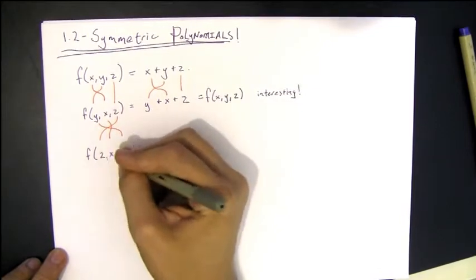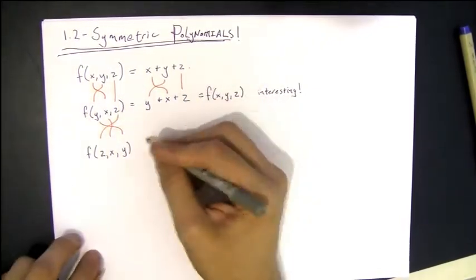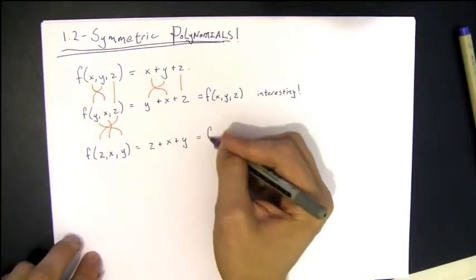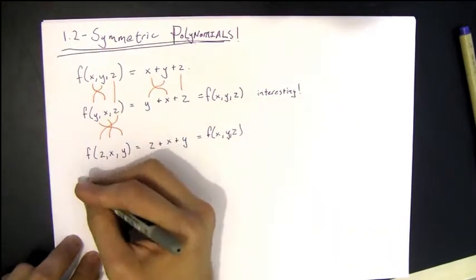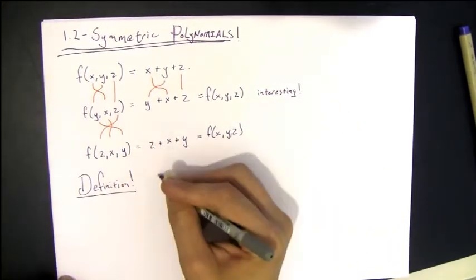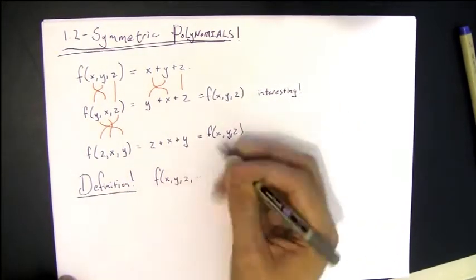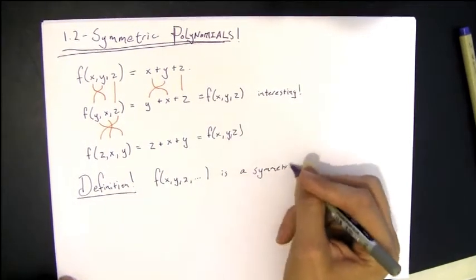Okay, so that's cool. And then if you switch all the variables around, so you have z, x, y, then you still have x plus y plus z. So any way you flip those three variables around, because of the fact that addition is commutative, you still have the same polynomial.